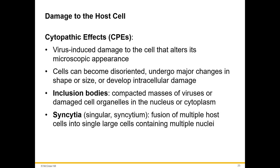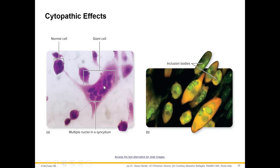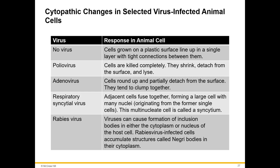Syncytia occur when cells fuse together — certain viruses have the ability to cause cells to fuse. An example is the respiratory syncytial virus. Inclusion bodies are also commonly found in numerous virally infected cells.